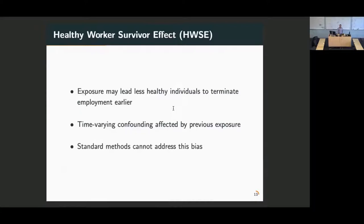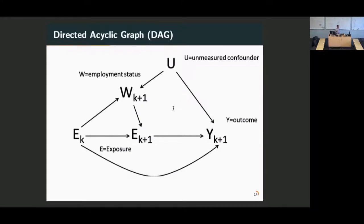The problem with this is that a standard regression approach cannot deal with this. We need to use more advanced methodology. This is a directed acyclic graph trying to describe the problem. I have E as the exposure of interest, Y is the outcome, W is being actively employed, and there's some unmeasured common cause of both being actively employed and developing the outcome of interest. That could be underlying health status, that could be genetics, anything. At time point K plus one, someone who is actively employed will be exposed. You have to be actively employed in occupational epidemiology examples to be exposed. But being actively employed at K plus one is dependent on your exposure. If you're more sensitive to the exposure of interest, if it's an irritant or causing subclinical health conditions, then being exposed earlier will lead you to leave work.